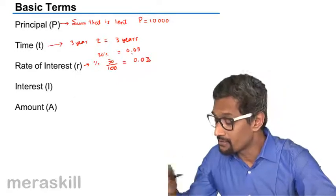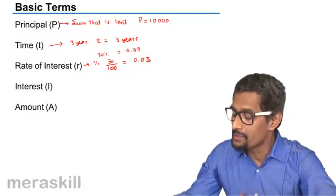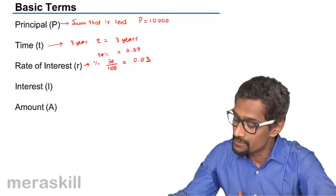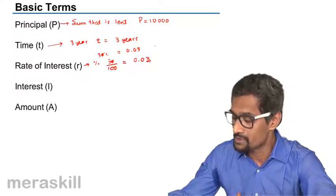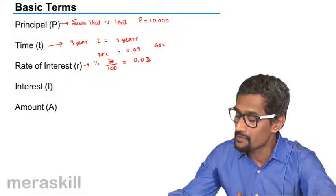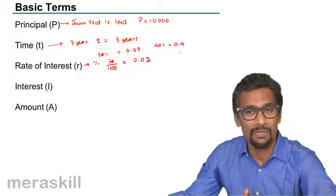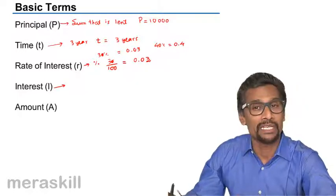Now, here we have made a mistake. I'm sorry. It should be 3%. So we can change this to 3%. Suppose it's 3%, then we write it as 0.03. Suppose it's 40%, we write it as 0.4, which is 40 by 100. And interest is different from the rate of interest.